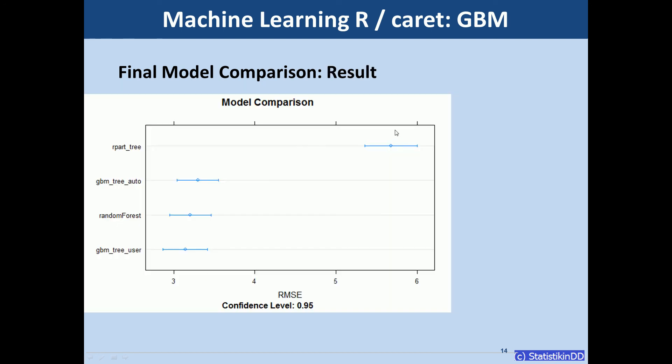We start with a graphical representation. Models are sorted by model performance. So that we see the single decision tree is far off. The other three models are quite close. And indeed our user defined gradient boosting machine wins this competition.